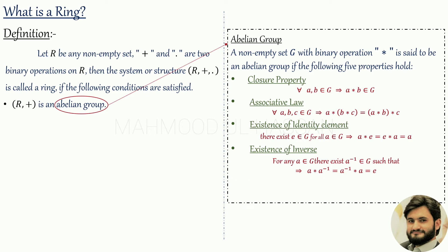The last condition is the commutative property, which says that for all a, b belonging to G, a steric b equals b steric a. So if we have a non-empty set G under a binary operation steric and these five conditions are satisfied, then we have an abelian group.